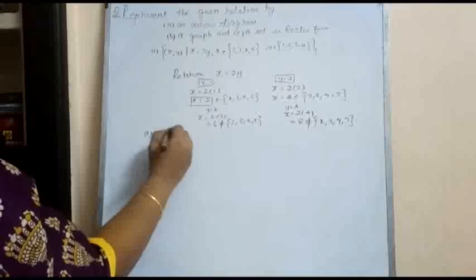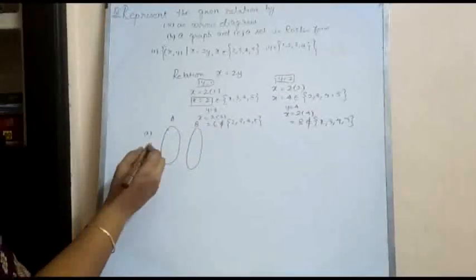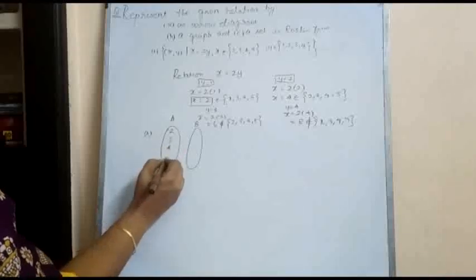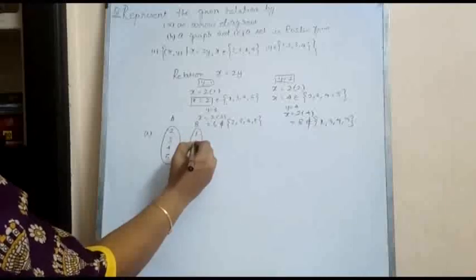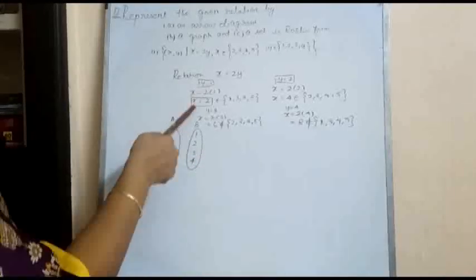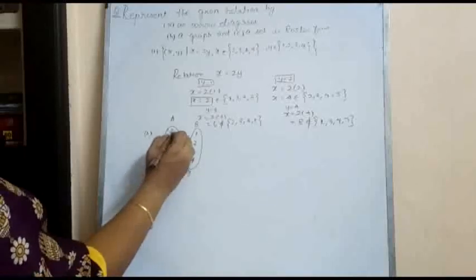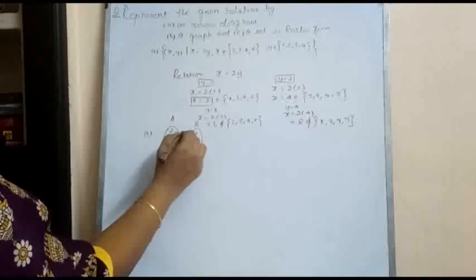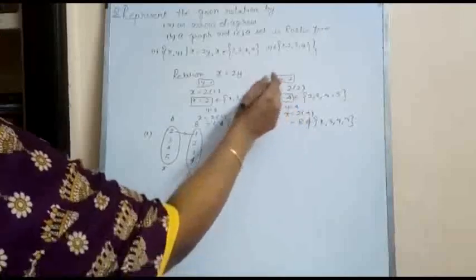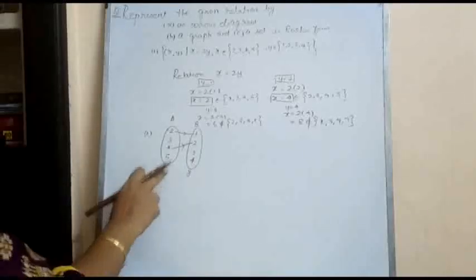The first method they are asking us to represent is the arrow diagram. Set A has elements 2, 3, 4, and 5; set B has elements 1, 2, 3, and 4. When x=2, y=1; when x=4, y=2. So this is the arrow diagram for this illustration.